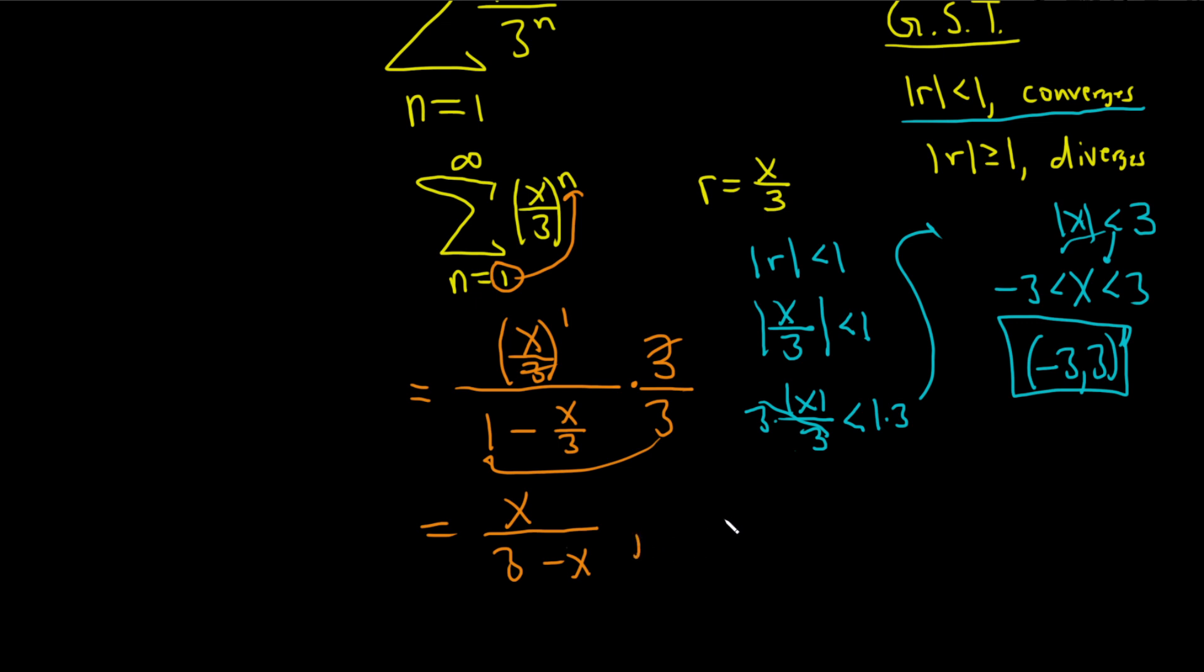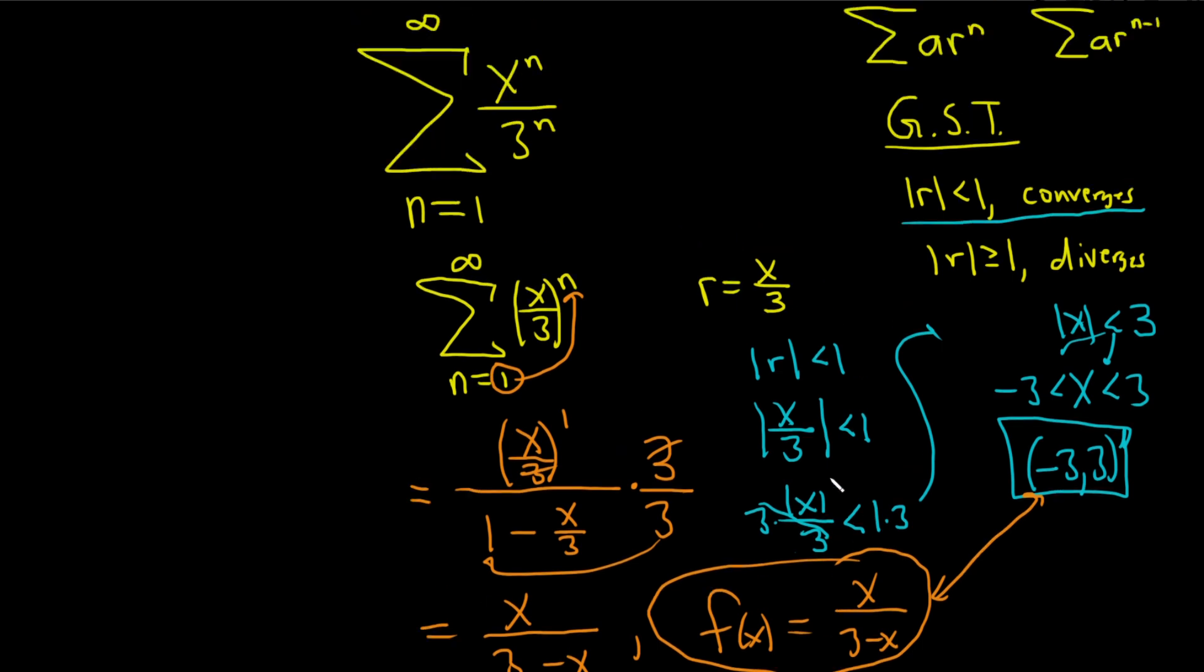So we end up with our series is actually a function, which I'll call f of x. And it's x over 3 minus x. So we've written our series as a function of x. And this is true whenever x is between negative 3 and 3. It's a pretty interesting idea, right? So this is equal to x over 3 minus x, right?